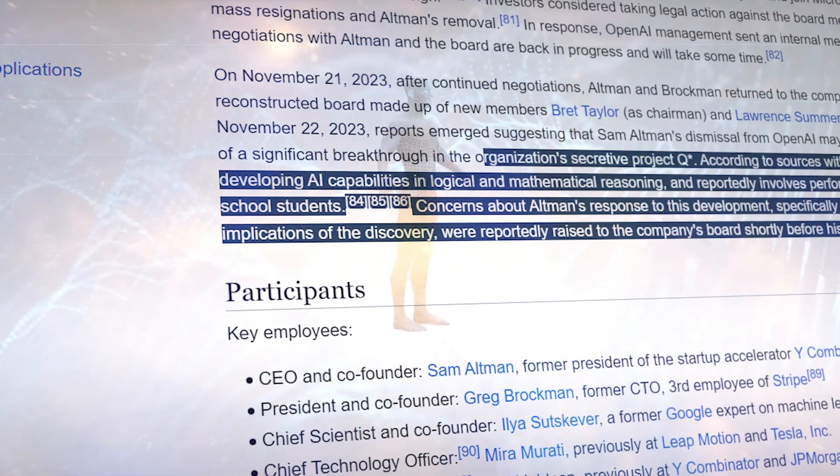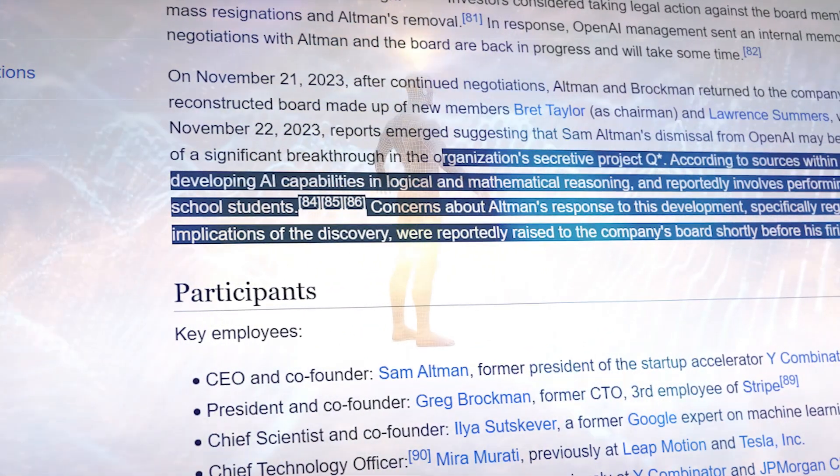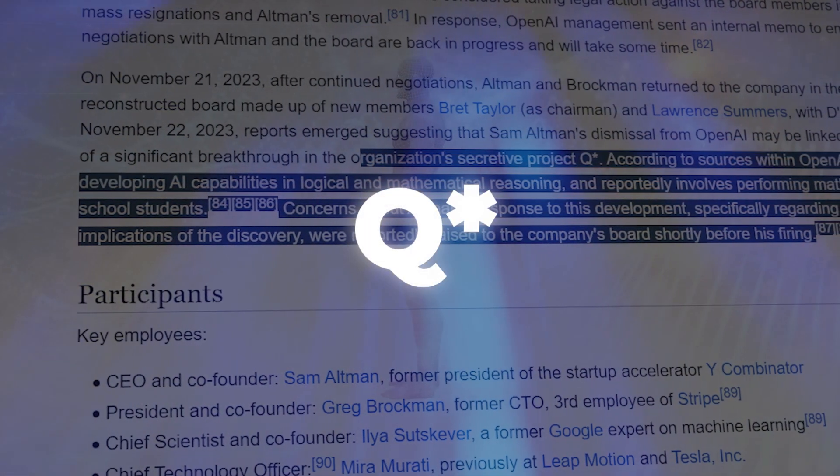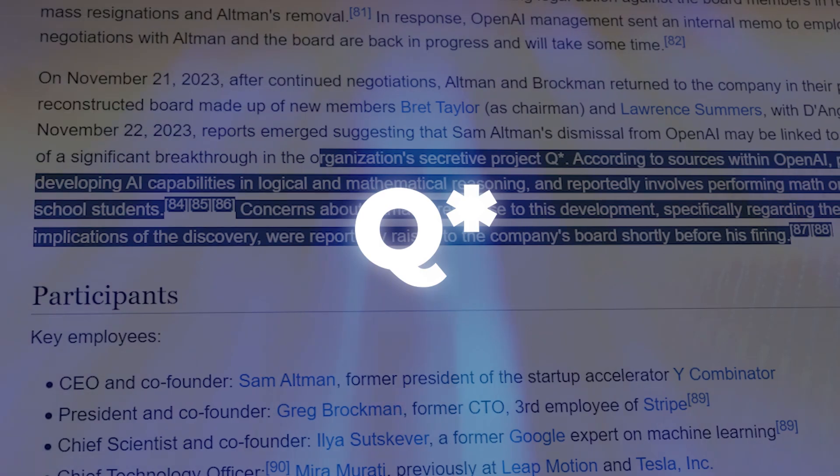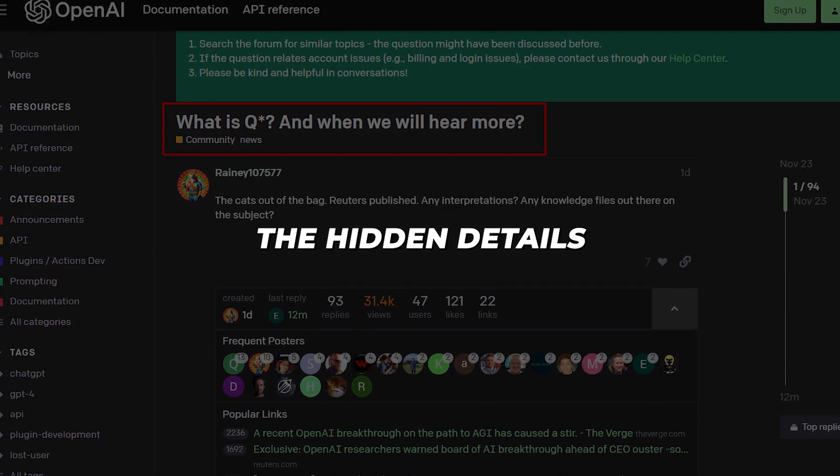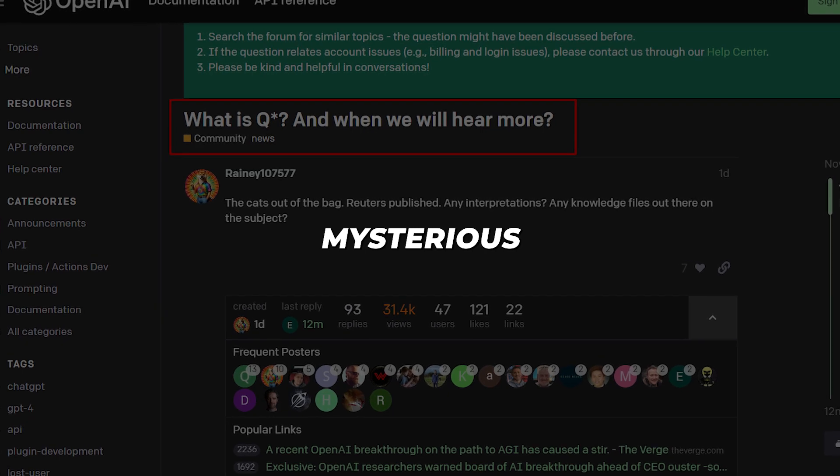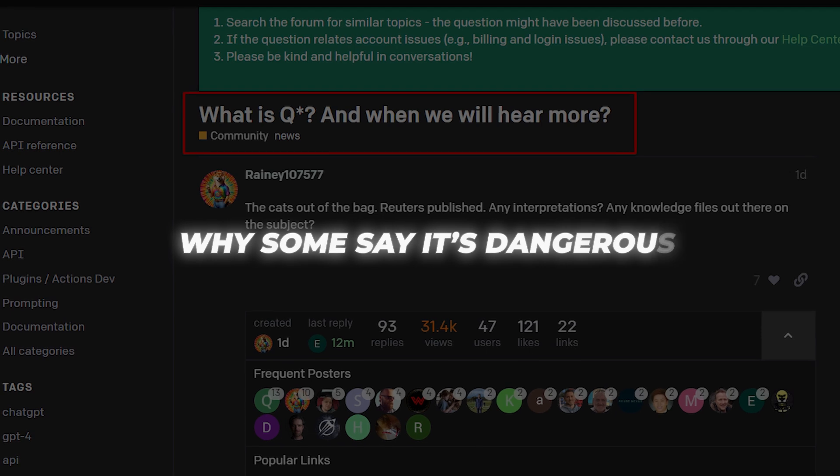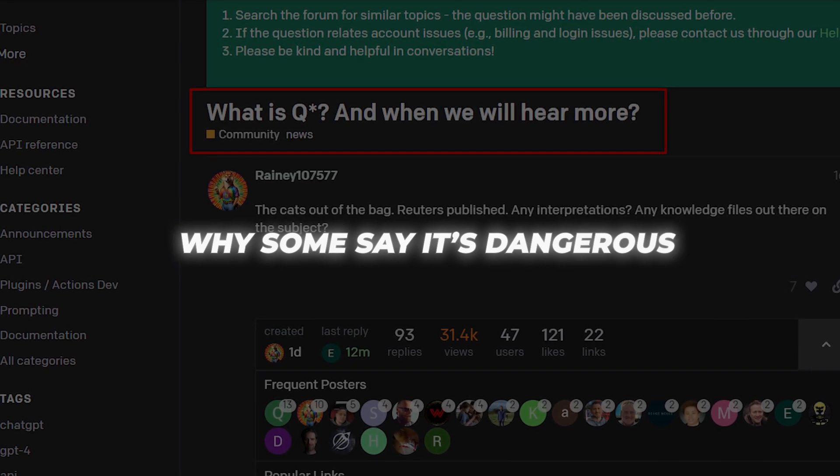There's a secret project brewing at the cutting-edge AI lab at OpenAI. Insiders claim it's called Q* and that it could accelerate the march toward advanced AI, unlike anything we've ever seen. So today we'll uncover the hidden details of OpenAI's mysterious Q* model, from how it works to why some say it's dangerous. You don't want to miss this.